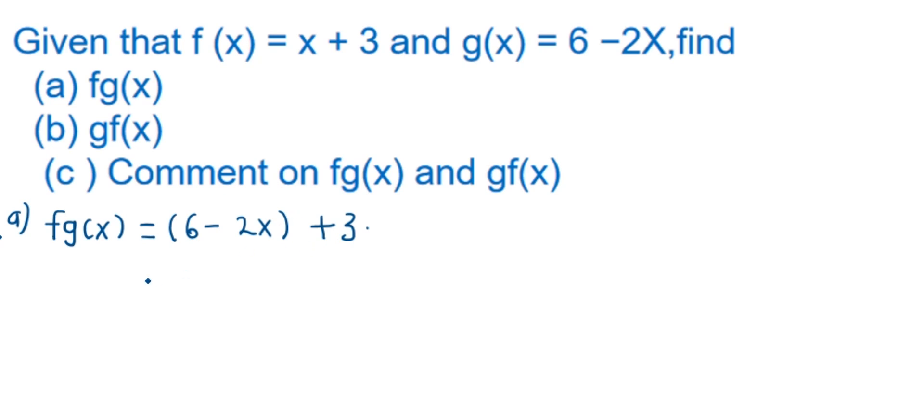When we try to simplify this, we are going to have 6 plus 3, 9 minus 2x. And this is f of g of x. That is our part A.